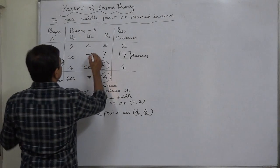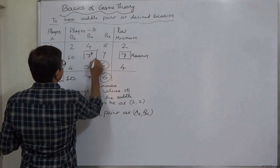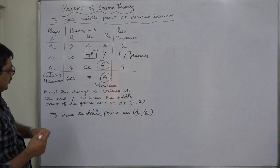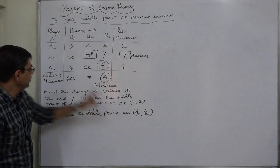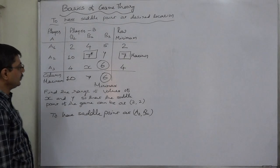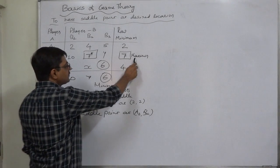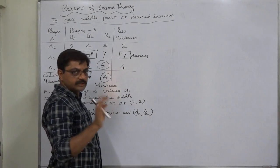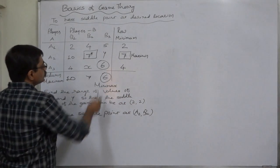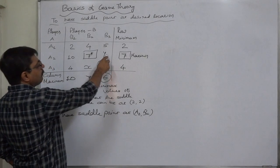Now what if we want the saddle point at this place, at the place of seven at two two, means at A2 B2?